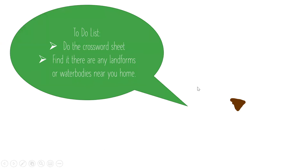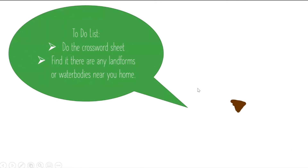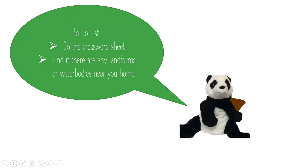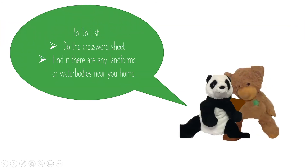Here's our to-do list with our Panda mascot. The first thing: do the crossword sheet. The second: find if there are any landforms or water bodies near your home. And the third: email us or contact us if you need any help.